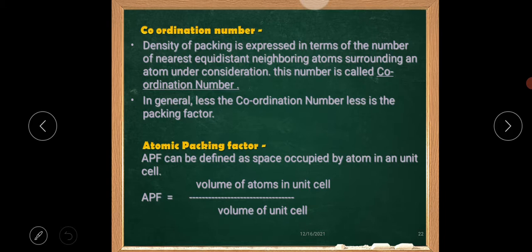Atomic packing factor, APF. APF can be defined as space occupied by atom in a unit cell. APF is calculated as APF equals volume of atoms in unit cell divided by volume of unit cell.